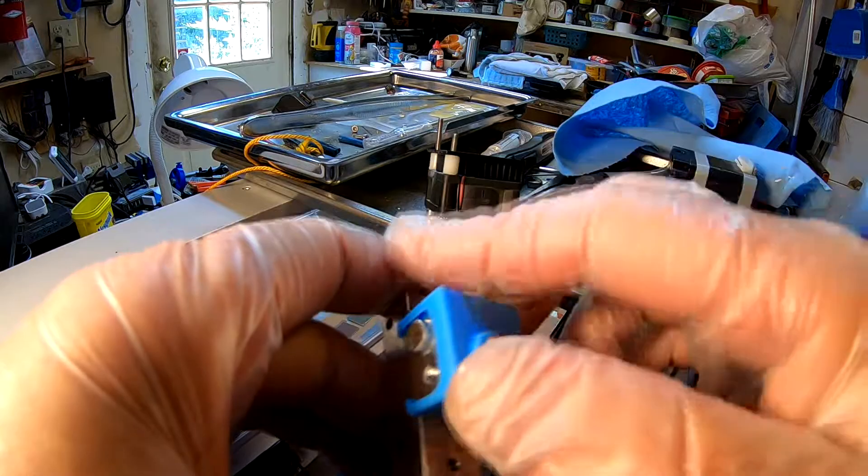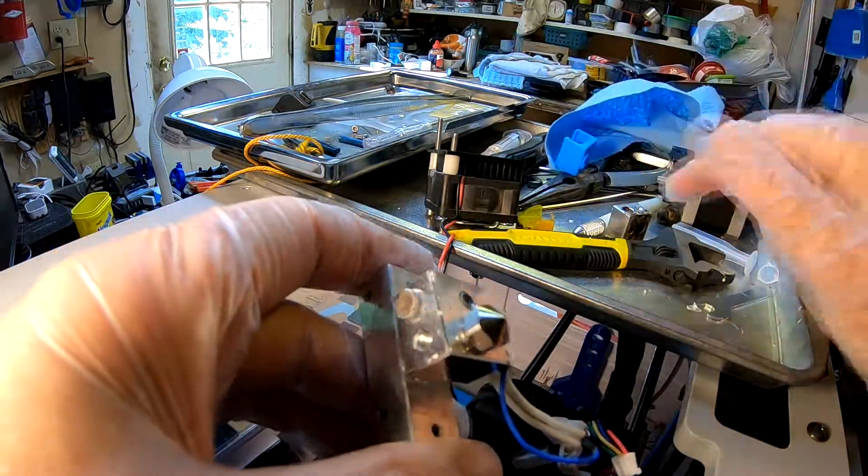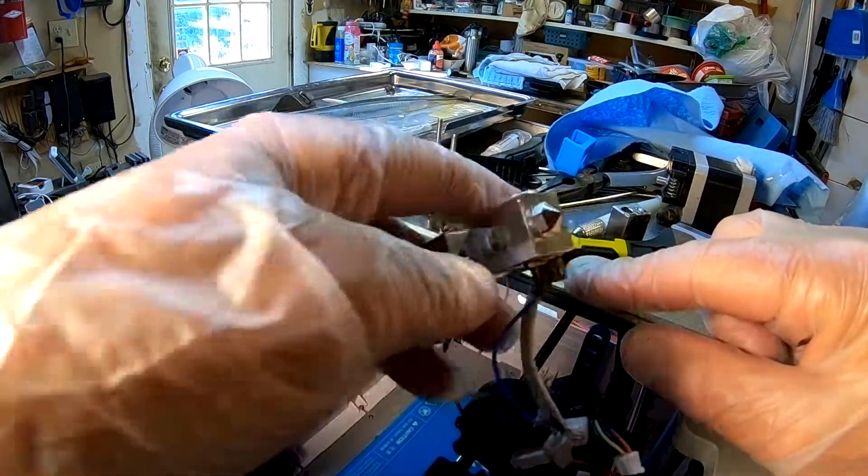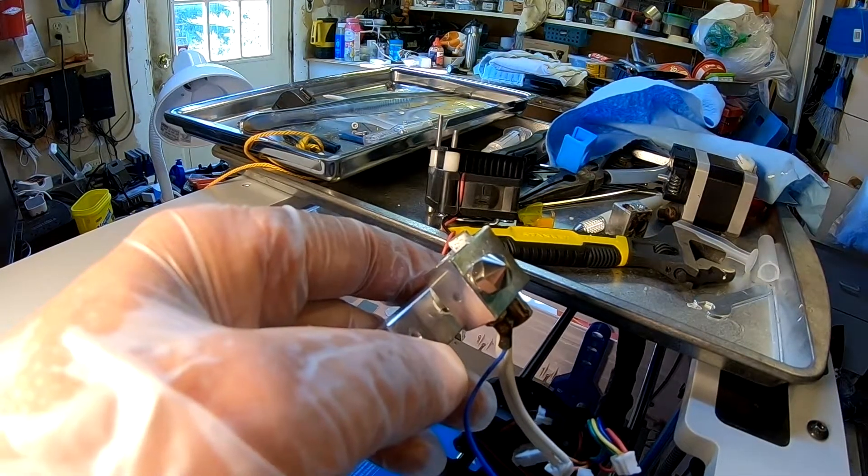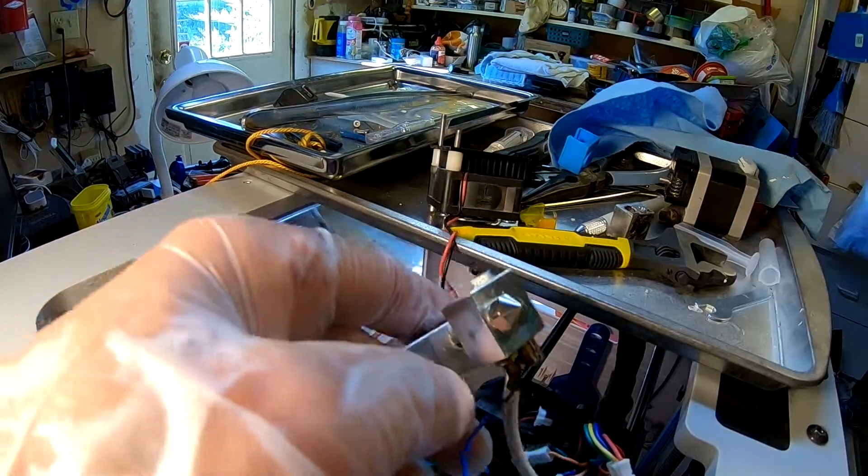Alright, so heat this up. Take this off first, obviously. Heat this up, put it on the tray, heat it up, and then we'll tighten it up to finish. Then we'll let it cool down. And then we'll go ahead and put the printer all back.